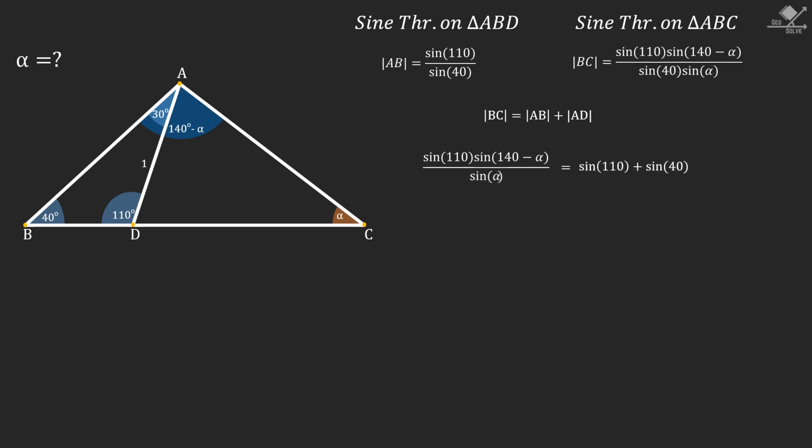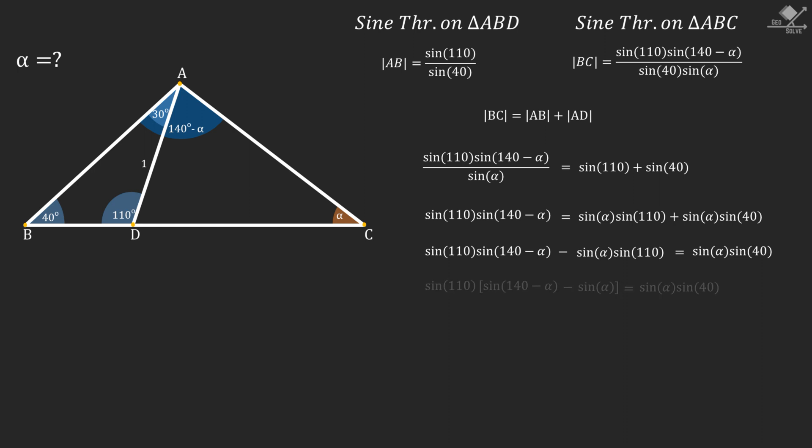And from here, both sine 40 terms will cancel out. Multiplying both sides of the equation with sine alpha will give us this equation. Now let's subtract sine alpha times sine 110 term from both sides. And using sine 110 term as common multiplier, we will end up with this equation.